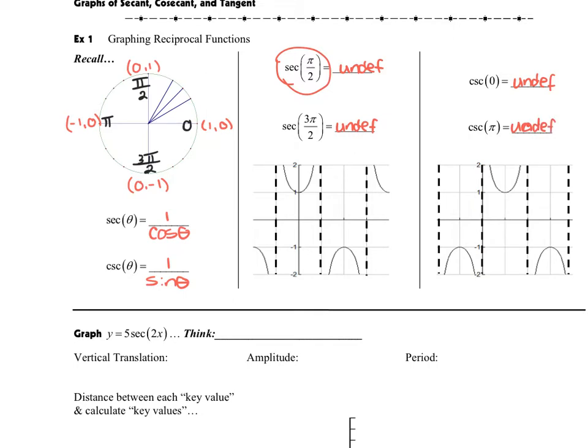Now, when we look at these graphs, it's because of these values that are undefined that are creating these asymptotes right here and right here and so on. We also have an asymptote here and an asymptote here. Those are coming from those undefined values.